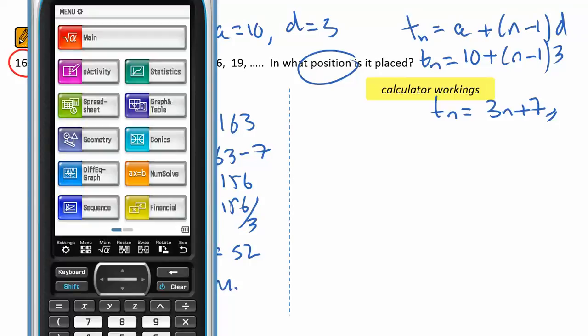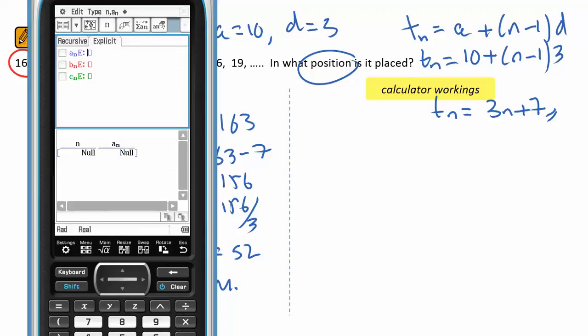Your Casio class pad has an extremely handy sequence app on it. So if I select that, I'm given two choices: a recursive one, which we won't be looking at the moment, that's for first order difference equations, and an explicit one.